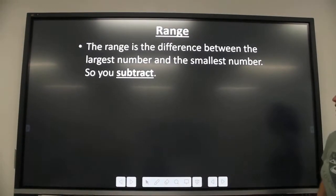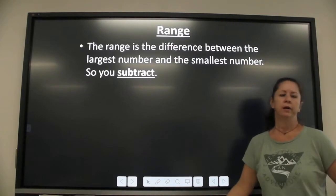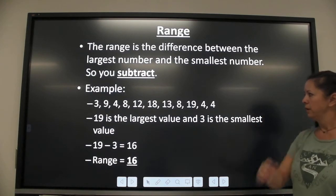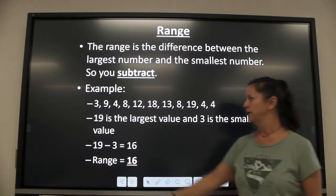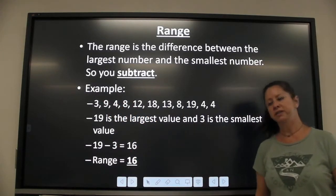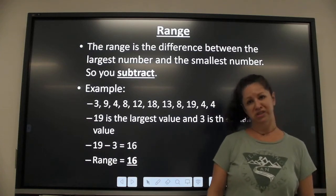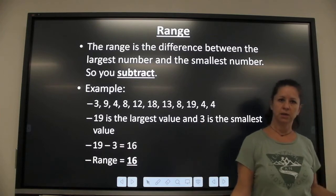And then the range is the difference between the largest number and the smallest number. All you got to do is subtract. Find your biggest number, find your smallest number, and subtract. In this group, 19 is my biggest, 3 is my smallest, so 19 minus 3. My range is 16 because there's 16 numbers between 19 and 3.